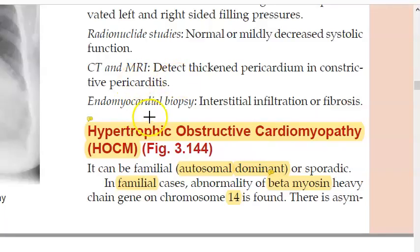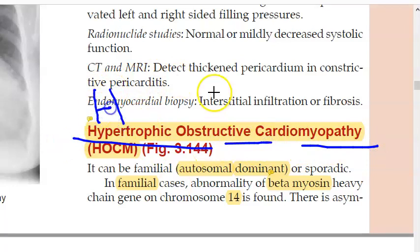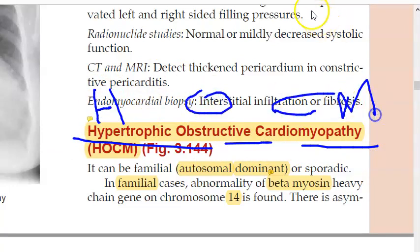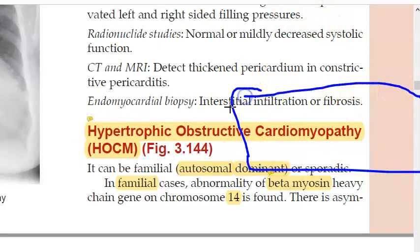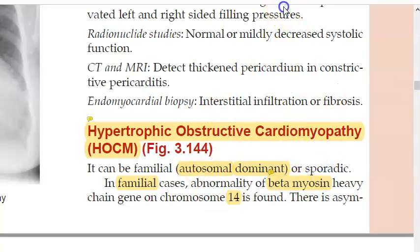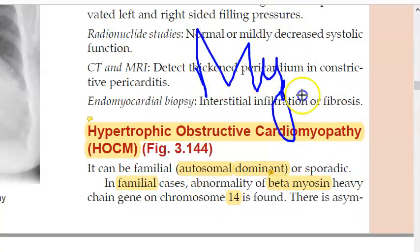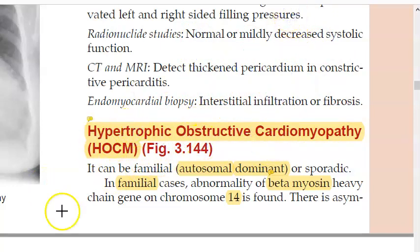In this video we want to look at hypertrophic obstructive cardiomyopathy, HOCM or HCM. It is one of the types of cardiomyopathies. The word 'myo' means muscle, so basically the muscle of the heart has some issue. One variety of this cardiomyopathy is hypertrophic obstructive cardiomyopathy, which you will see in teenagers.